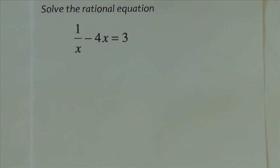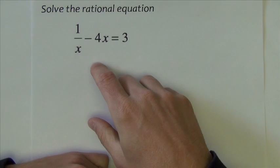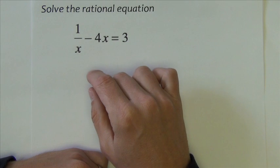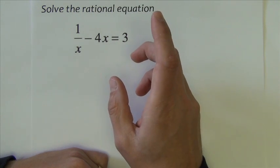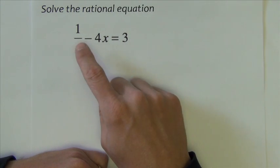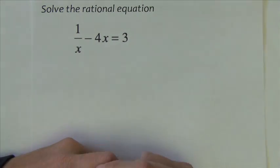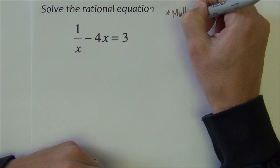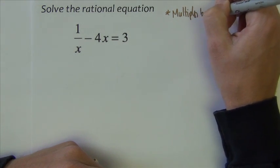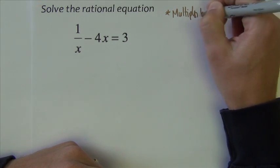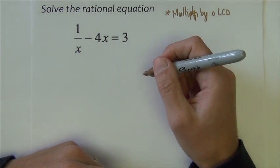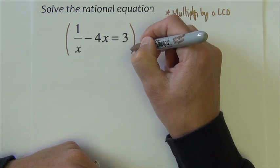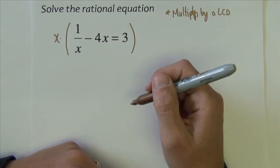Alright, first example, solve the rational equation. We can see that it is a rational equation, there is one term written as a fraction, so that trumps them all and makes this a rational equation. The technique that I like to use, and we've seen this before, this is not new, it's just new with x's in the denominator, is I'm going to multiply by a least common denominator. So here, that would mean multiplying by x.